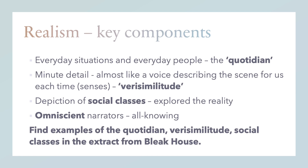Dickens was part of a literary movement called realism, and realism means what it sounds like — it was a group of writers incorporating all kinds of different texts that were reflective of what was real, of real life. Realism has some key ingredients that we need to look for. The first thing you need to look for in a piece of realism is everyday situations and everyday people — normal things happening and normal people that we would expect to see on a day-to-day basis. There's a word for this called the quotidian, and the quotidian means the everyday.